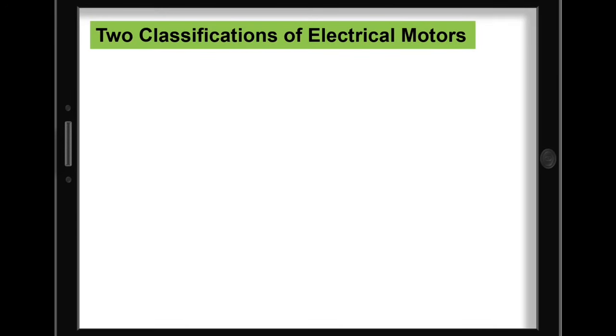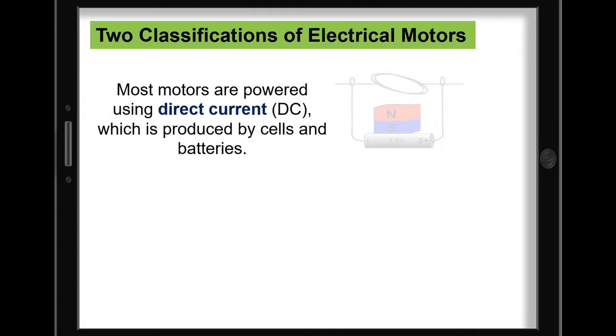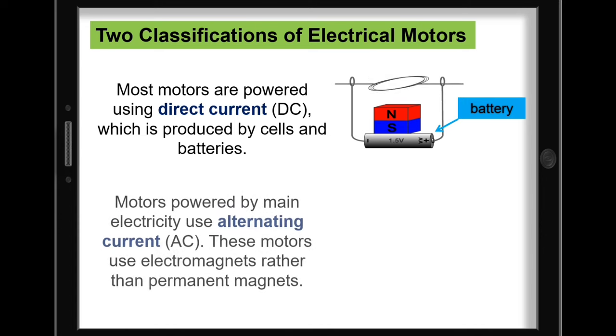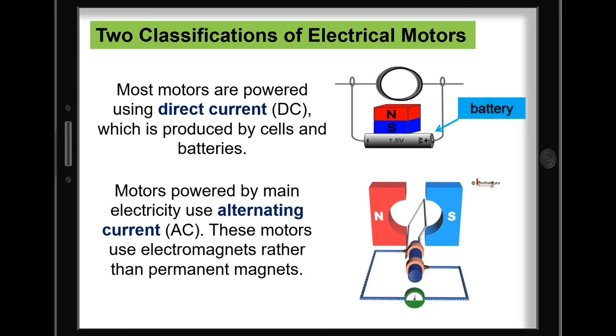There are two classifications of electrical motors. Most motors are powered using direct current or DC, which is produced by cells and batteries. Motors powered by main electricity use alternating current or AC. These motors use electromagnets rather than permanent magnets.